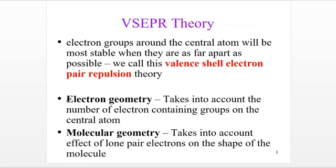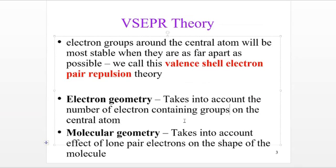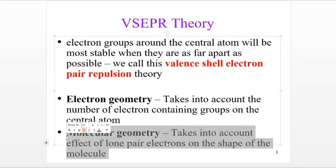There are two types of geometries: electron geometry and molecular geometry. Electron geometry takes into account the number of electron-containing groups. Molecular geometry takes into account the effect of lone pairs — meaning the repulsion effect on the shape of the molecule. Molecular geometry is more of the three-dimensional arrangement of the molecule itself, factoring in what lone pairs do, which is repel the bonds.